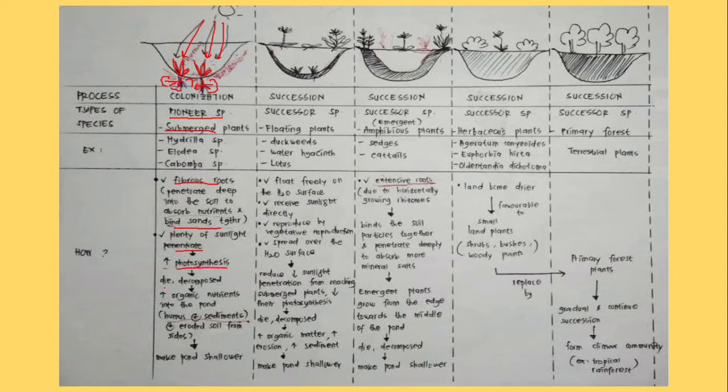Some of these plants die and decompose, will increase organic nutrients in the pond in the forms of humus and also sediments. Humus is like dust particles, sediments are like dusty soil.